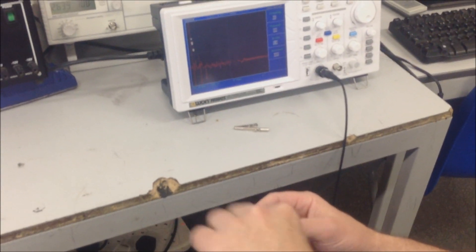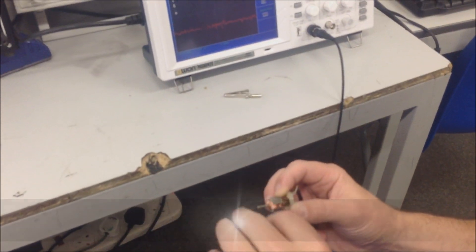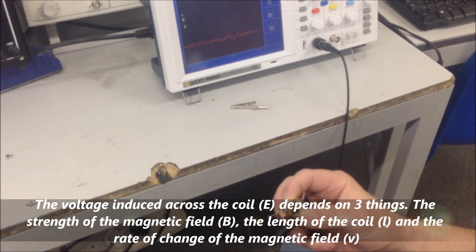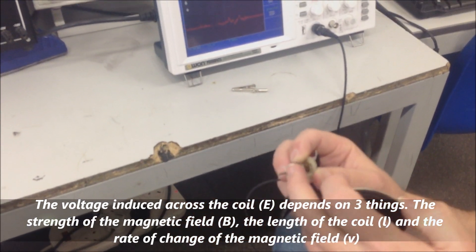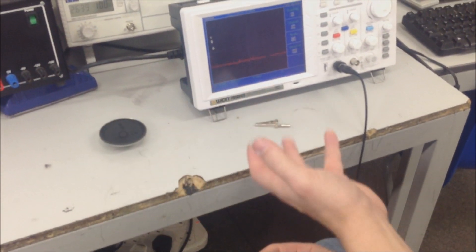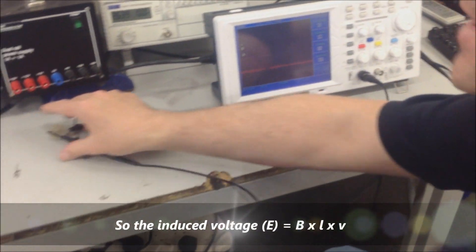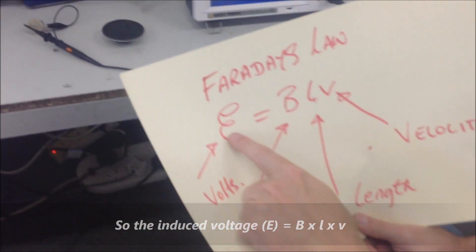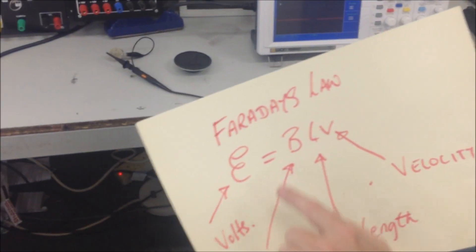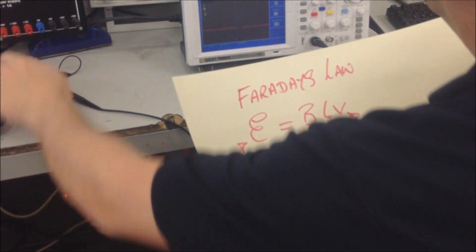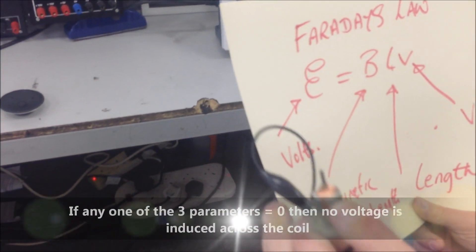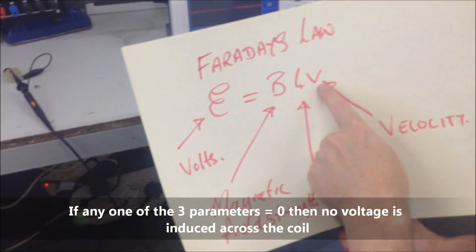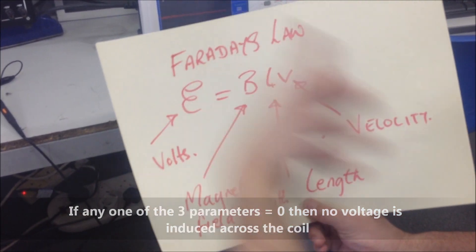That waveform there is an induced voltage. And the faster we move it, and the closer it is, quite difficult to do actually. The faster the relative movement and the stronger the magnetic field, or the closer the magnetic field is to the coil, the bigger the voltage will be. And that's covered in Faraday's law, which tells us the voltage induced in the coil is equal to the strength of the magnetic field, the length of the coil, and the velocity, how fast we move the coil.